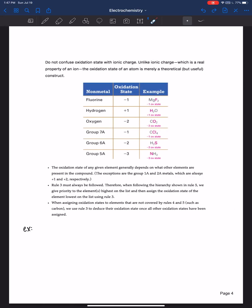Also oxidation states are not ionic charge. Ionic charge is real. It's a real property of the ion. But the oxidation state of an atom is just theoretical. It's like electron bookkeeping. It's really useful for us to quickly identify if a substance is being oxidized or reduced. The oxidation state of any given element generally depends on what other elements are present in the compound. The exceptions are the group 1a and 2a metals, which are always plus one and plus two respectively.